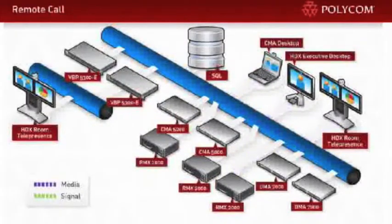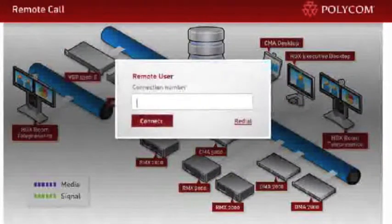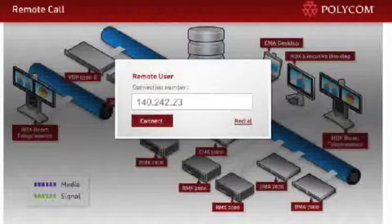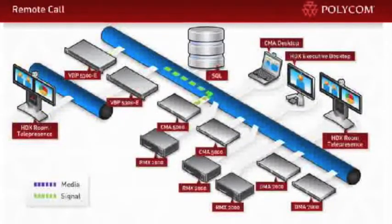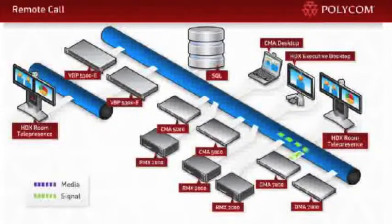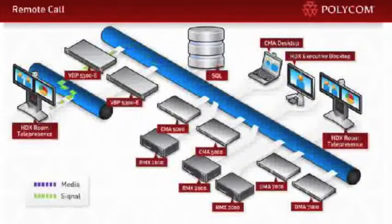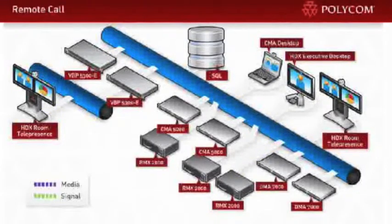Next, let's call into an enterprise as a remote user from outside the enterprise network. I'll again dial the virtual meeting room, except this time the call is routed to the CMA 5000 management application, which confirms my access rights and routes the call to the DMA. Using load balancing and other variables, the DMA instantaneously sends my call to the correct RMX.